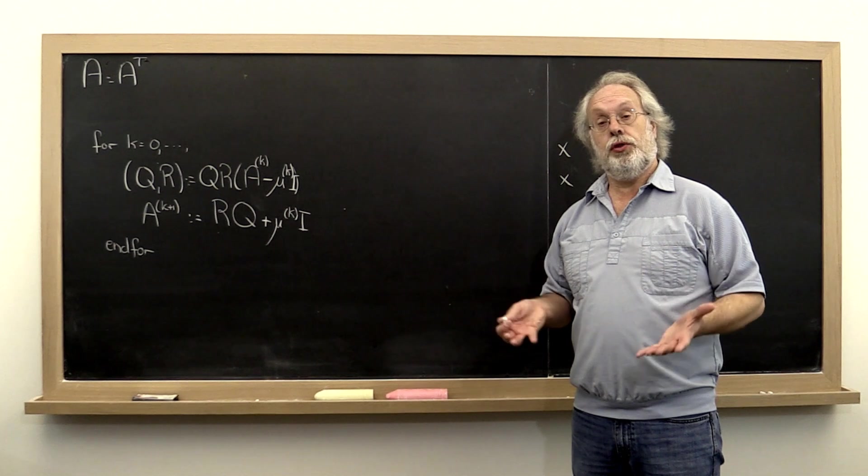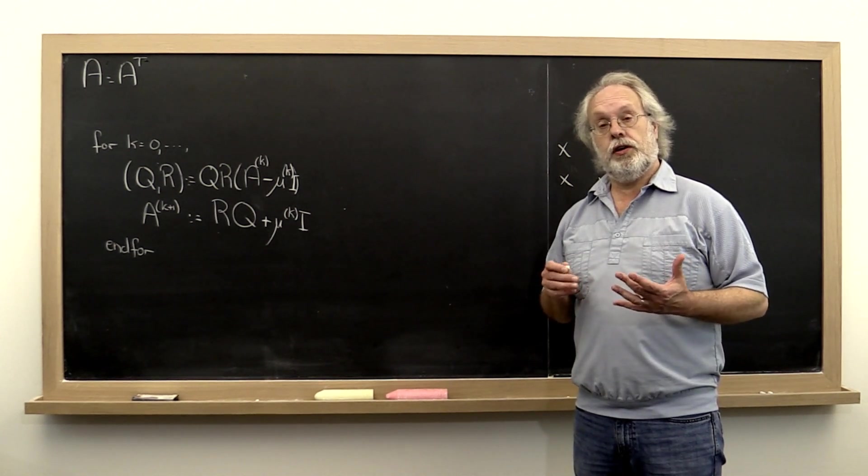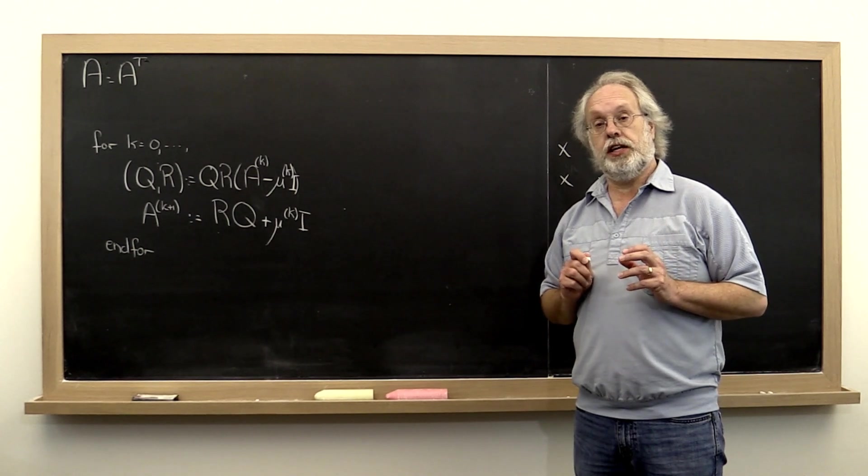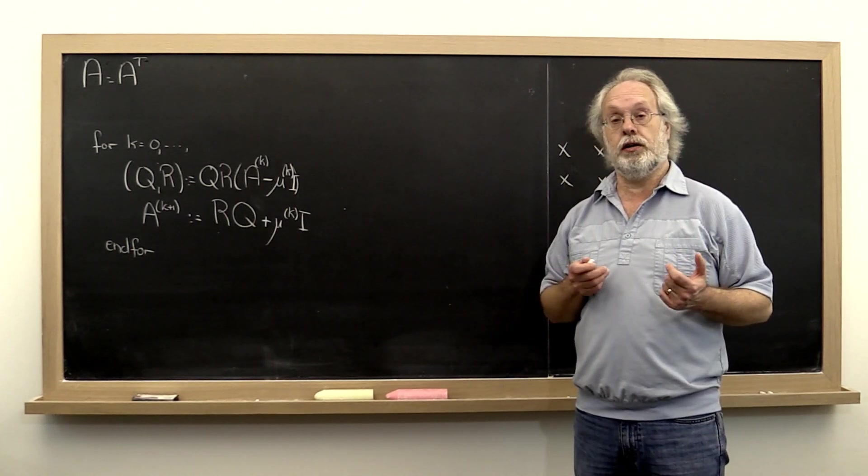Now that we have the implicit Q theorem, we can use it to come up with an absolutely stunning result in numerical linear algebra. This is known as the implicitly shifted QR algorithm.